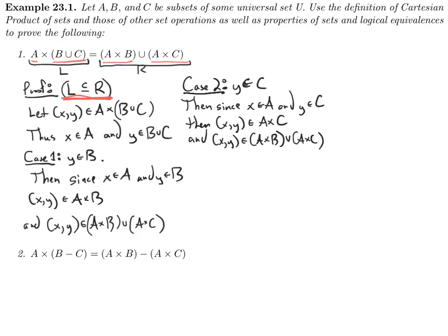Now let's do the second direction: the right side is a subset of the left side. Let X, Y be an element of A cross B union A cross C. Maybe it's a good idea now for you to pause the video and try this second direction. Remember, you need to show that it's also an element of A cross B union C.